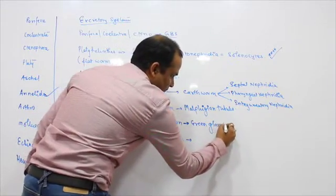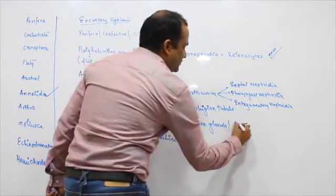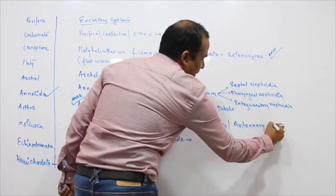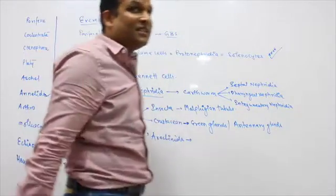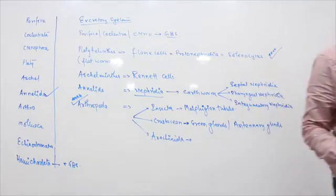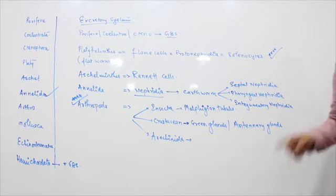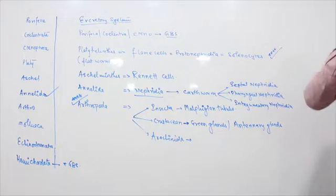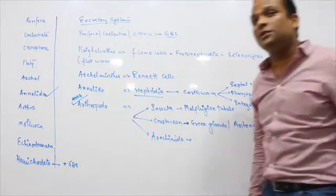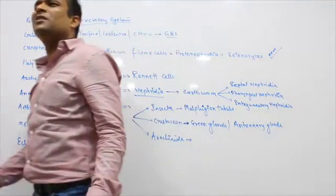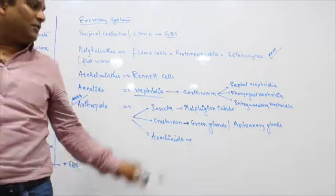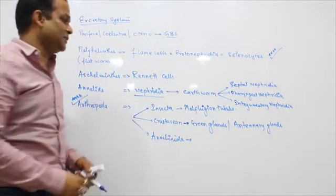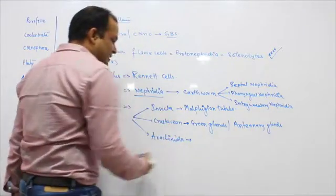In Crustaceans, the excretory organs are green glands, also called antennal glands. They are called antennal glands because they are found at the base of the antenna. Arthropods have antennae, and at the tip of the antenna these antennal glands are located.